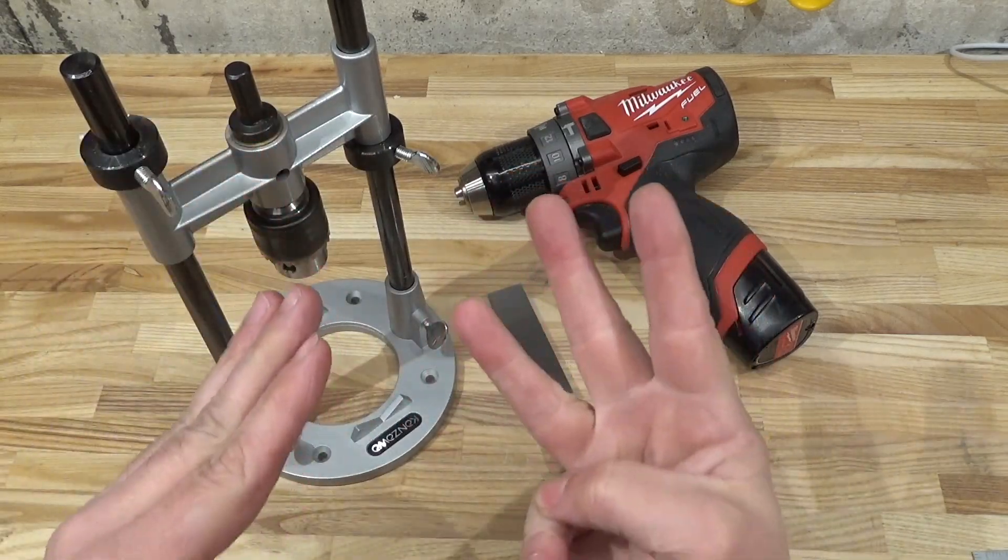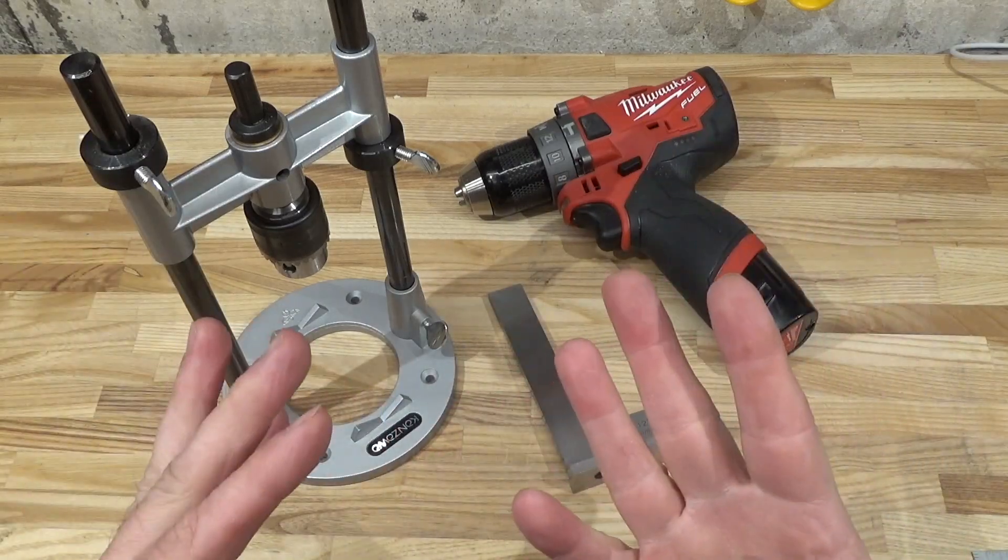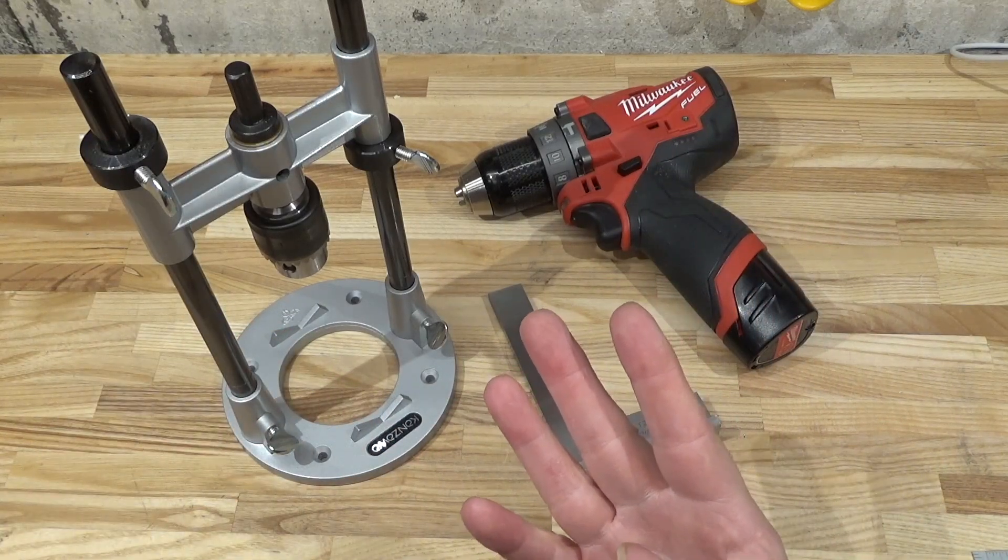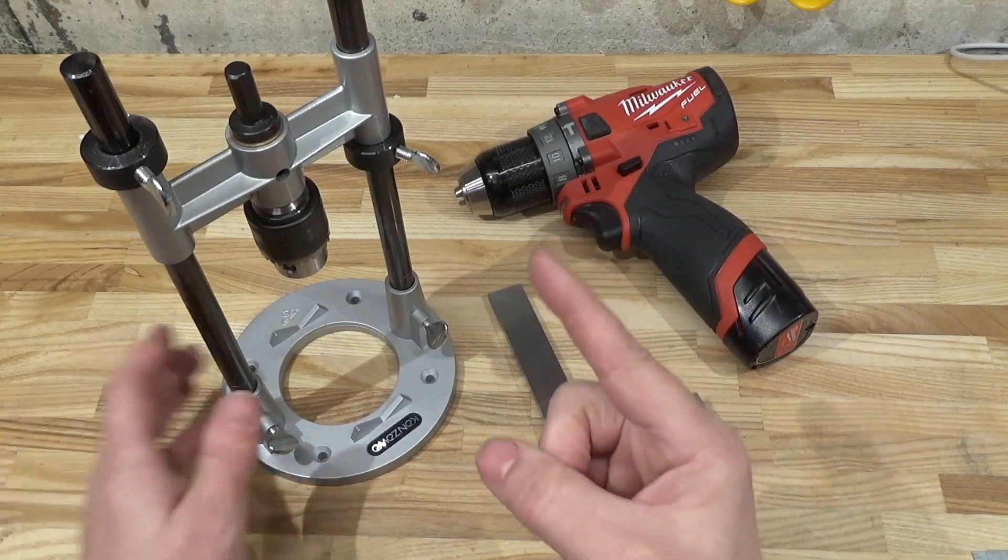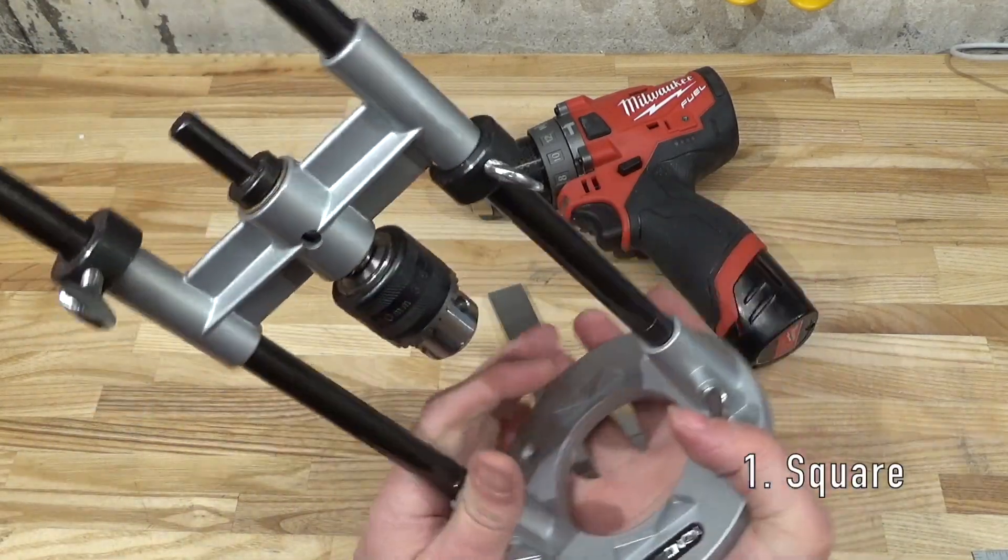Number one: you need to have system squareness. The axis that the drill is working on—the quill, the chuck—needs to be perpendicular to the surface.